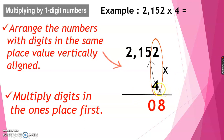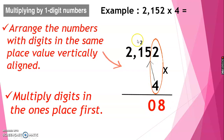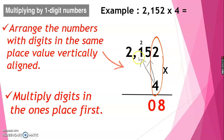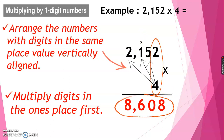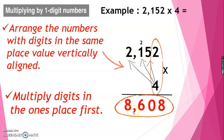Then next, 4 times 5 is equal to 20. Write 0 and carry the 2 to the top of the next digit. Then, 4 times 1 is equal to 4, plus 2 is equal to 6. Lastly, 4 times 2 is equal to 8. So the answer is 8,608.